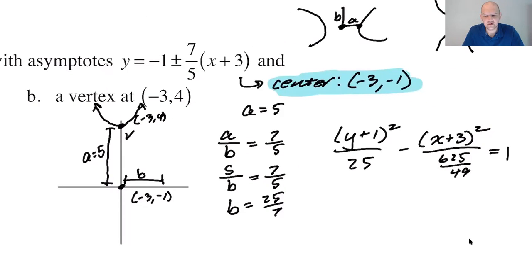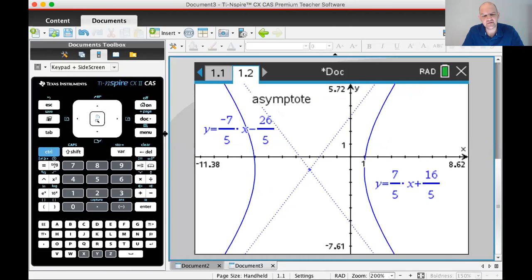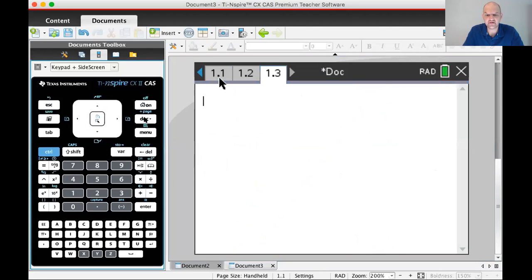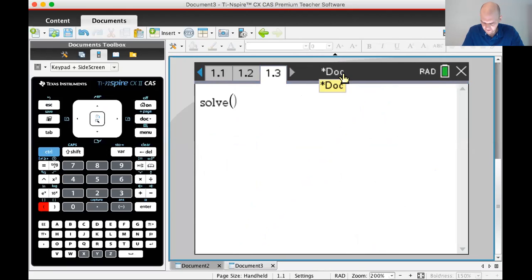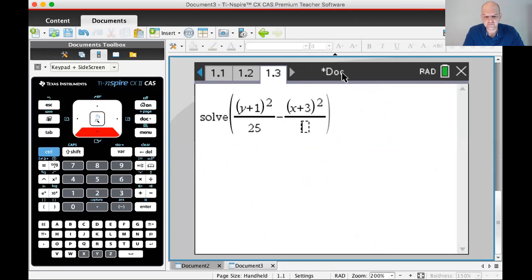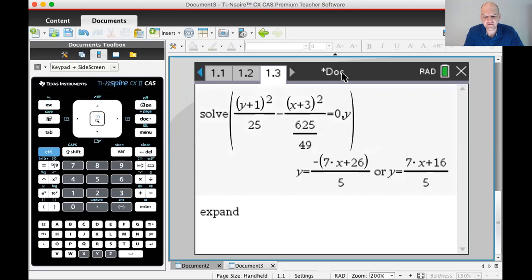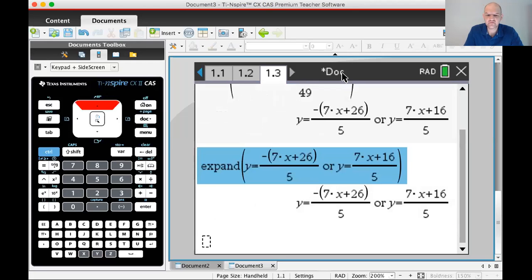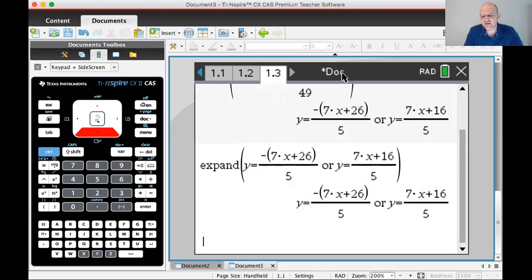So let's see here. We could try it. Let's try to check it. I'm going to solve (Y+1)²/25 - (X+3)²/(625/49) = 0 for Y. So this is, I'm going to find the asymptotes. So I get an expand to them. You know, the expanding is a waste of time.